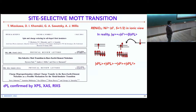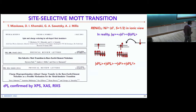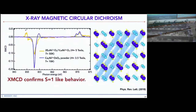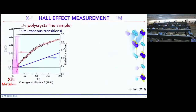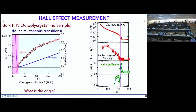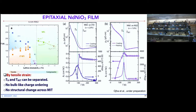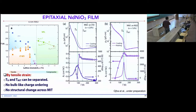Regarding the Hall coefficient: before it switches sign, it seems to sharply increase. That behavior occurs at the metal-insulator transition — it increases slightly then starts to decrease. We don't have a clear understanding of that feature at the moment.